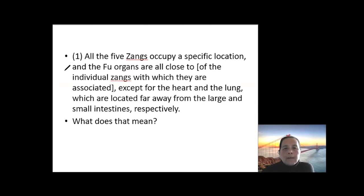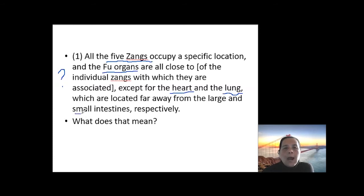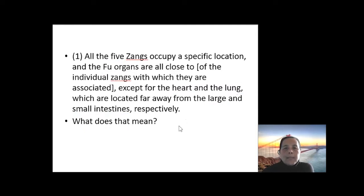Still questions first. The question is about the five zang organs and the six fu organs. Basically they are close to each other, but the difference is that the heart and the lung are located a little bit far away — heart matching with small intestine, and lung matching with large intestine — the locations are a little bit far away. So that is the question here, then we see how the Nan Jing explains this.